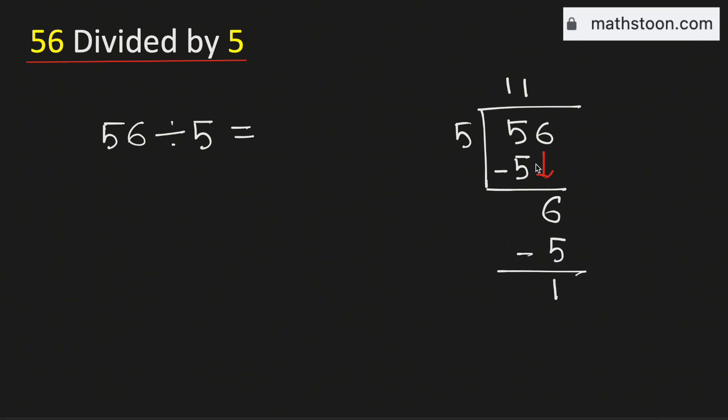As 5 cannot go into 1, that is why we need to put a decimal here so that we can bring one 0.